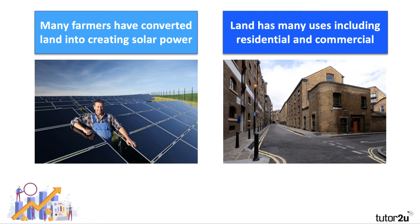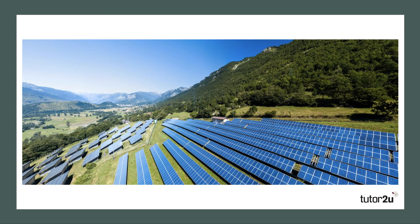Land is a great example of a factor resource with more than one potential use. Here we see some former factory space that has been converted into residential property, and it can also be used for commercial purposes, perhaps for shopping.